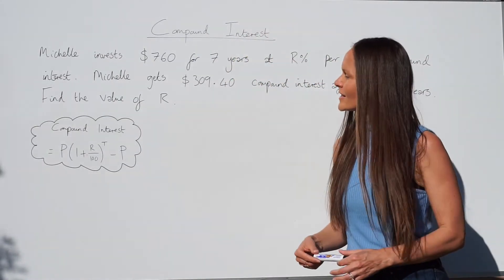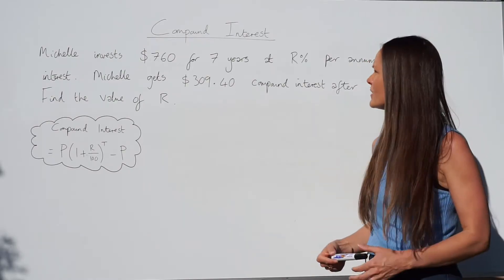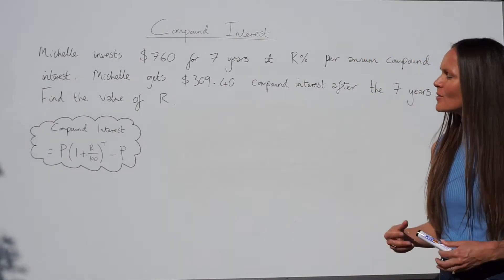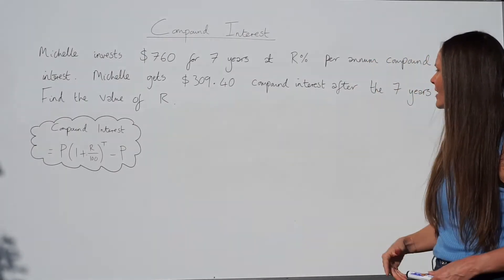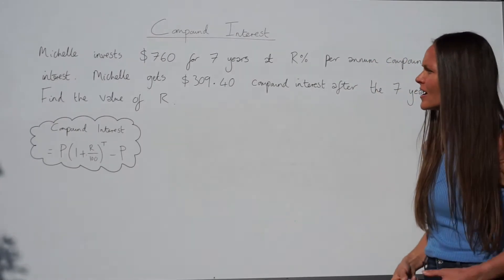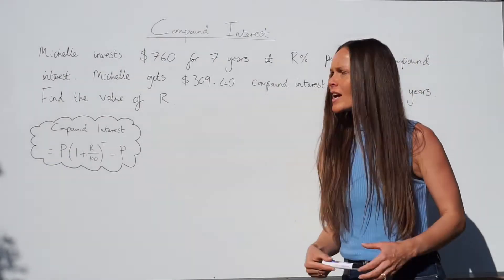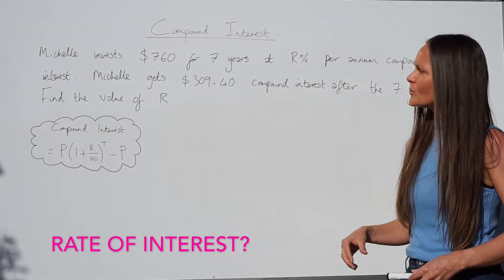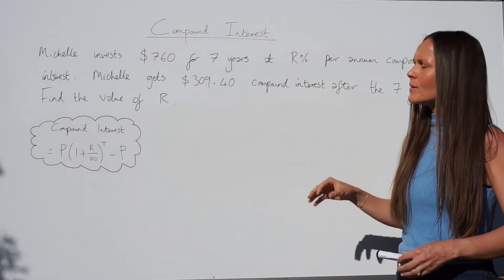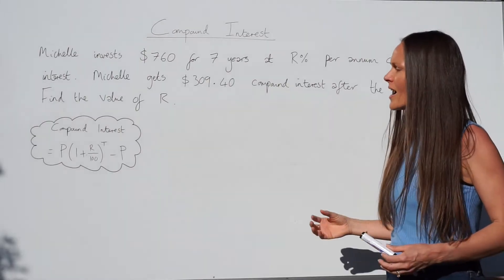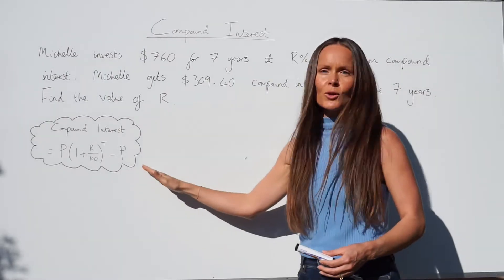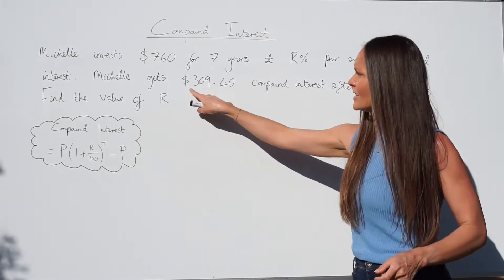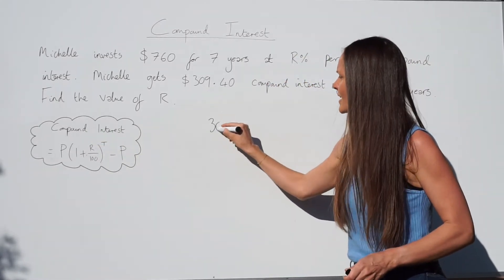In the next question, Michelle invests $760 for seven years at r percent per annum compound interest. Michelle gets $309.40 compound interest after the seven years. Find the value of r. We're trying to work out the rate of interest, so substitute all the given information into the compound interest formula.